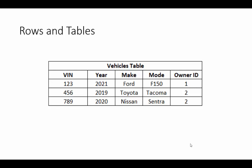Now we move on to rows and tables. In this example, we have the Vehicles table. All the rows and columns in this image make up what is called a table. Each row is called a record, and each column is called a field. Those are the basic components of a database table — rows and columns make up a table.